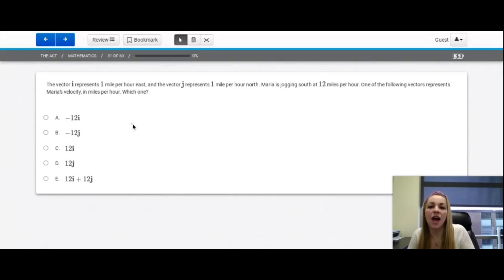We are given that vector i represents one mile per hour east, and we use this to denote vector. We are given that j represents one mile per hour north, and you can put ones here to represent that it's one. In this one we're curious about if she's jogging.